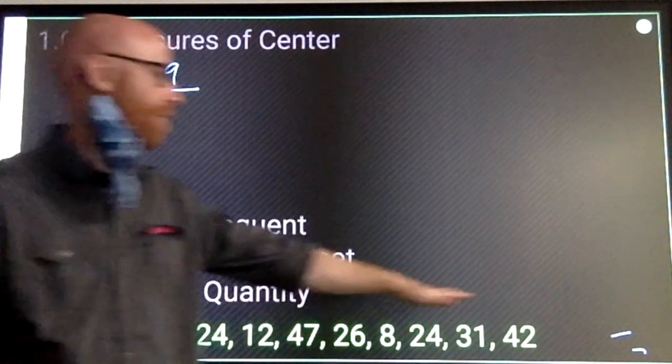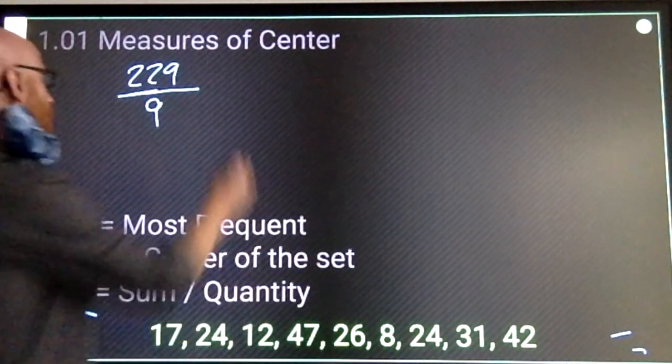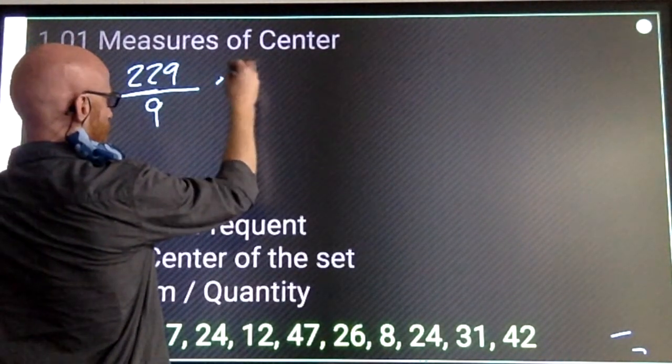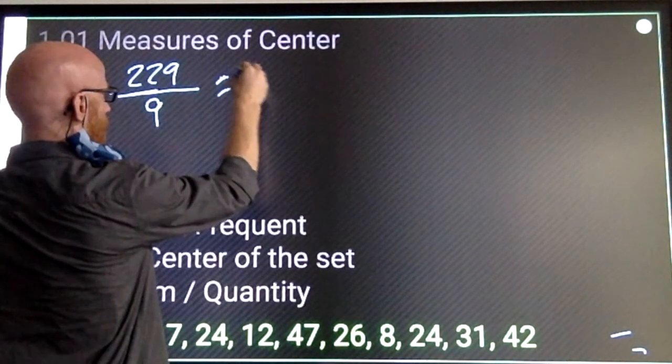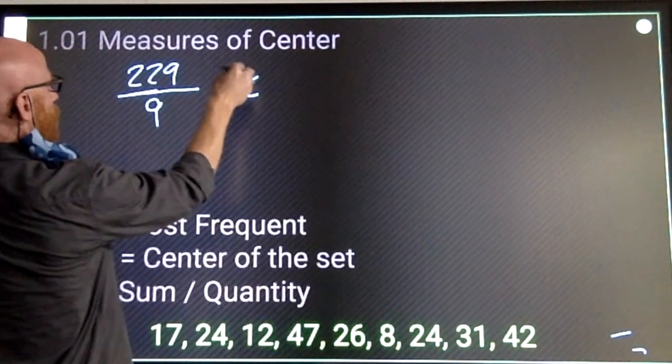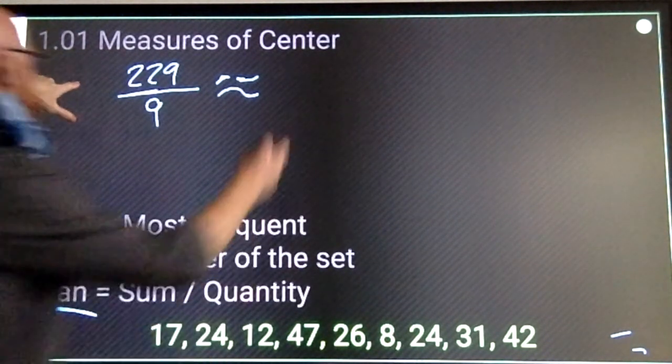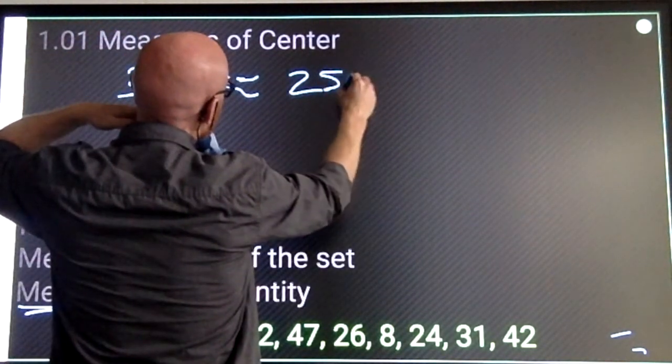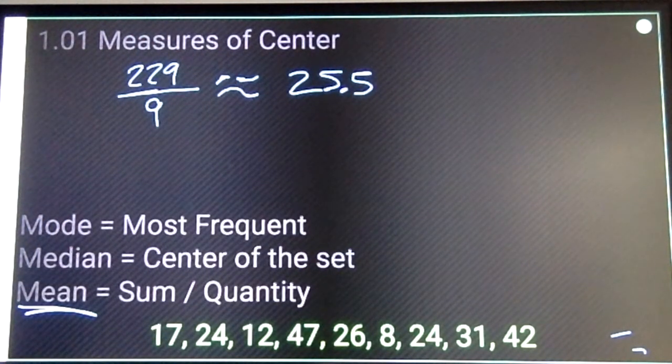So again, I added all of those numbers up, and then divide by how many items are in the set. A lot of times your mean is going to give you a number that you're going to have to round, so I'll put the squiggly equal sign. Looks like 25.5, approximately 25.5 is my mean.